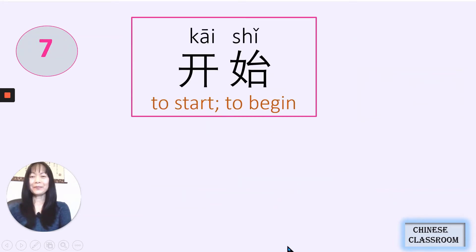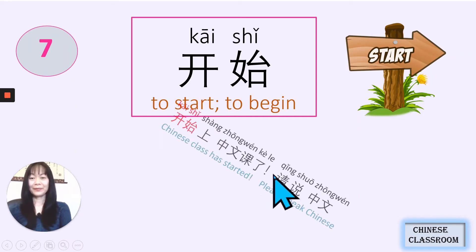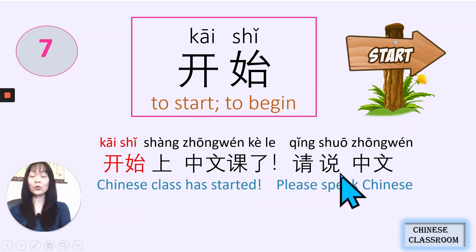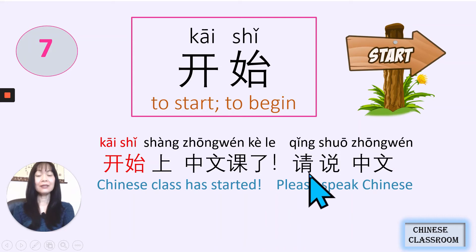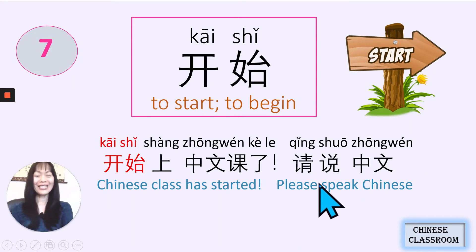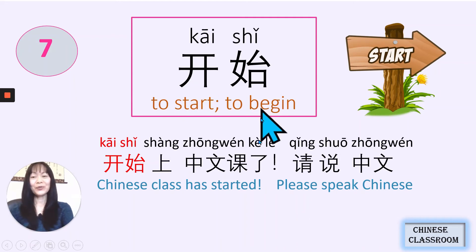Number 7: 开始, 开始 — to start, to begin. 开始上中文课了, 请说中文. 开始 — starts. 中文课 — Chinese class. 开始上中文课了 — Chinese class has started. 请 — please, 说 — speak. 请说中文 — please speak Chinese. Do you speak Chinese in your Chinese classroom? 开始.